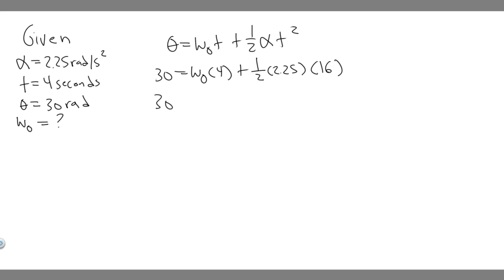So solving, we just got to solve for this. So 30, and I'm going to move it to the other side. So 30 minus 1 half times 2.25 times 16 is equal to omega 0 times 4. And if we want to solve, just divide both sides by 4. So you're just going to do 30 minus 1 half times 2.25 times 16 and then divide by 4.